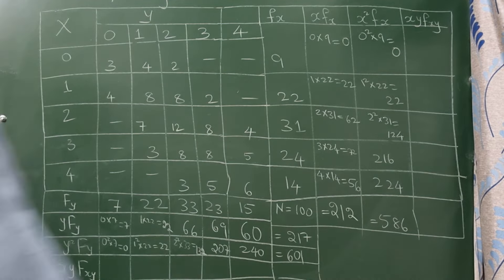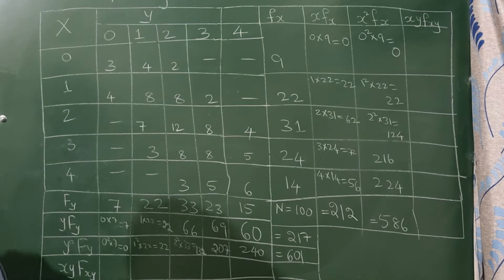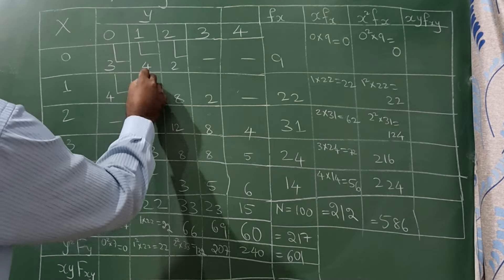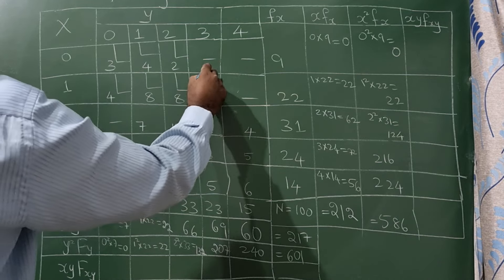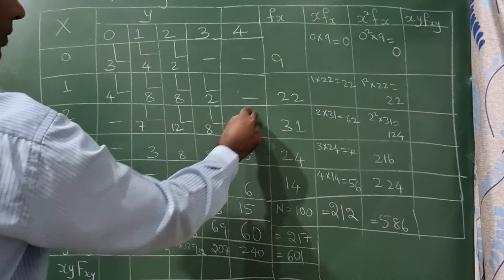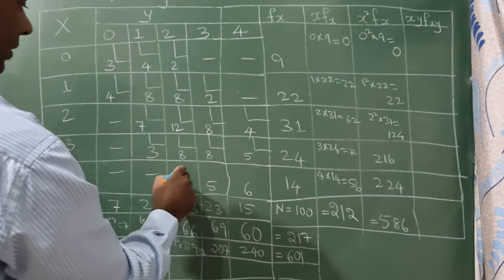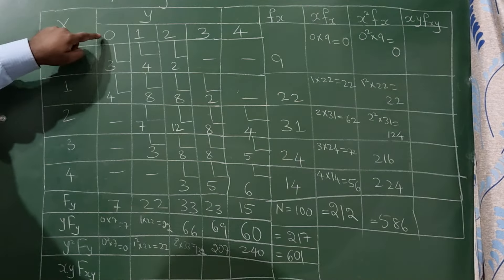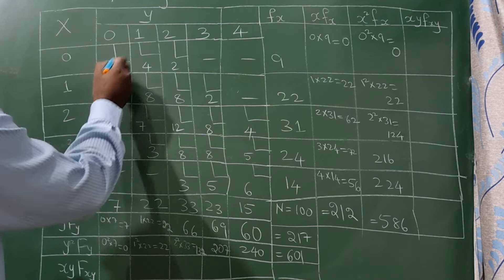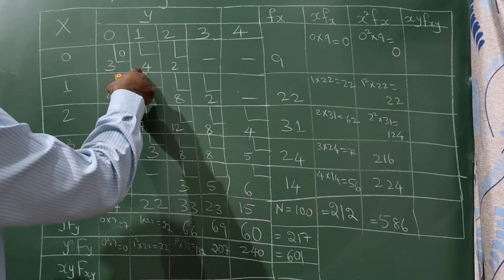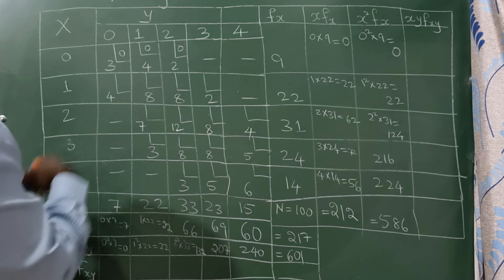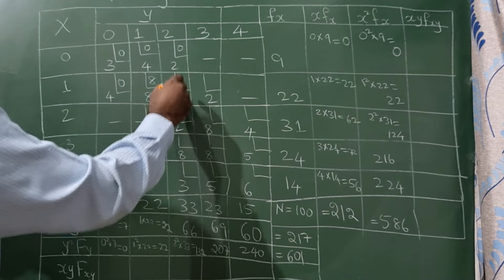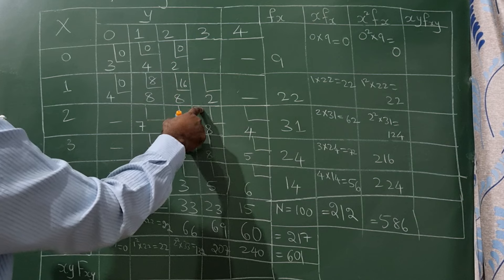For the last column, xy·fxy, we look at each cell where there is a number and compute x×y×f. So 0×0×3 = 0, 0×1×4 = 0, 0×2×2 = 0. Then 1×0×4 = 0, 1×1×8 = 8, 1×2×8 = 16, and 1×3×3 = 9 (actually 6).